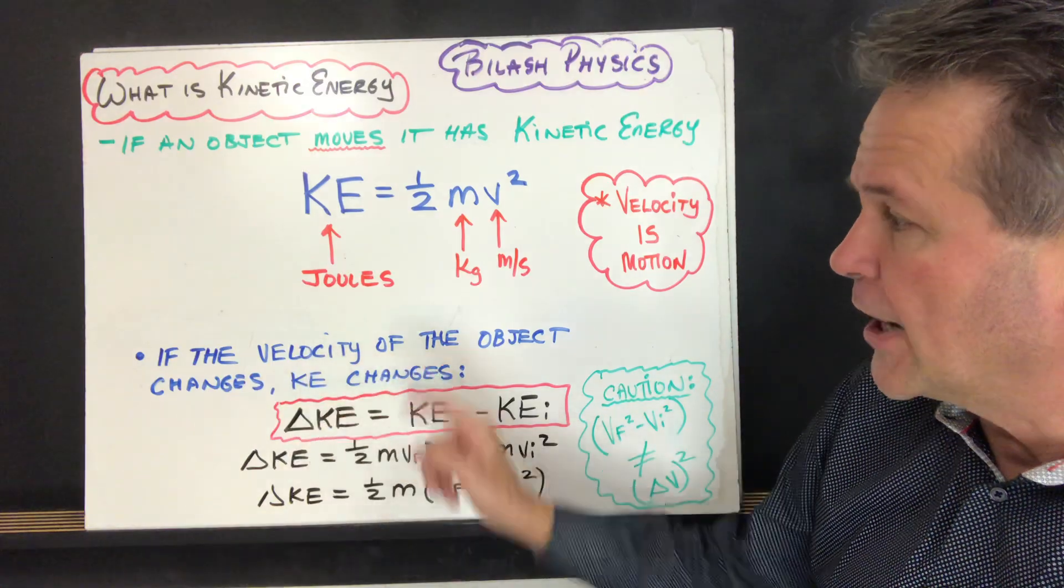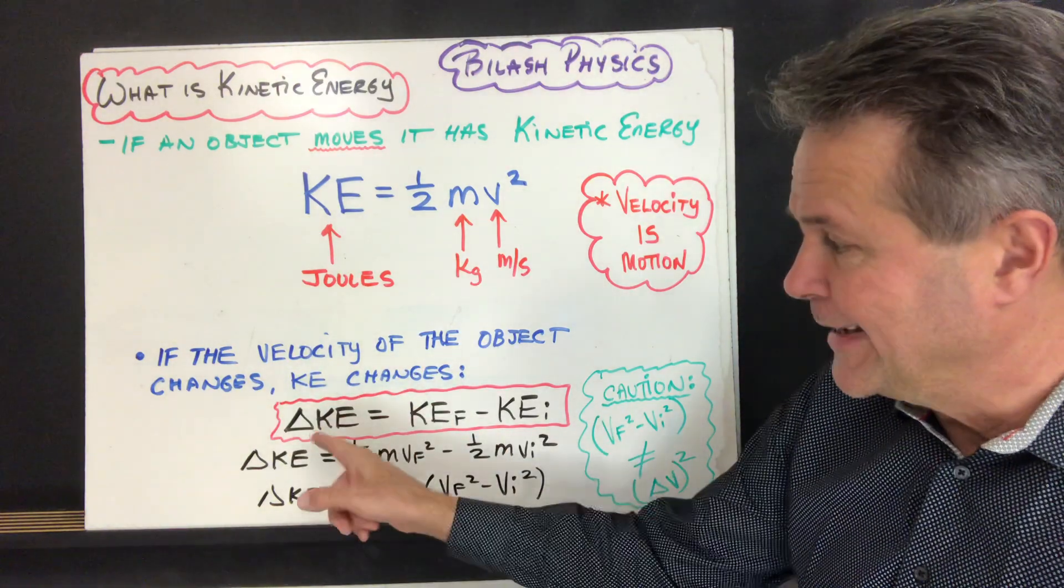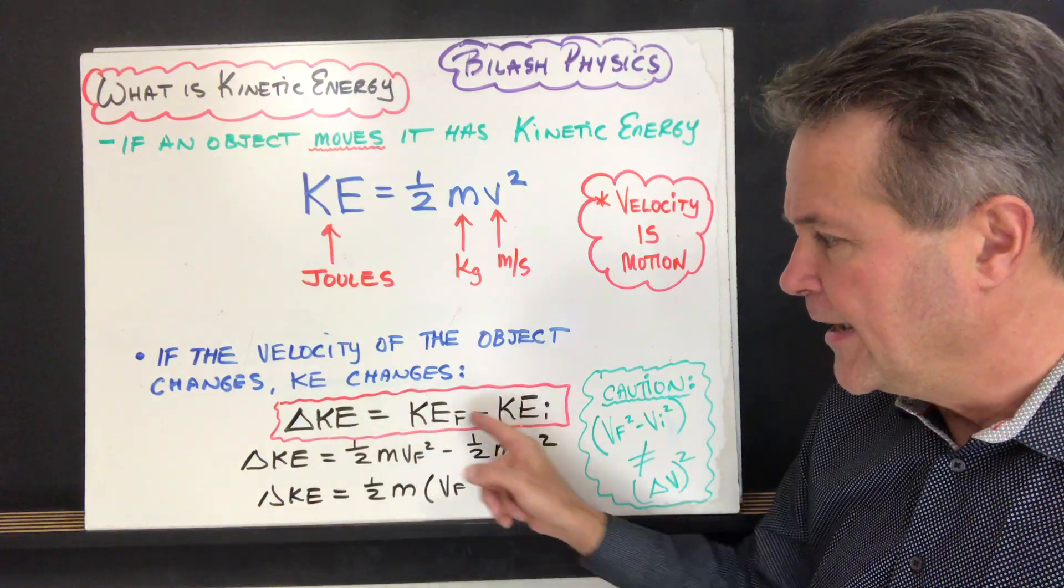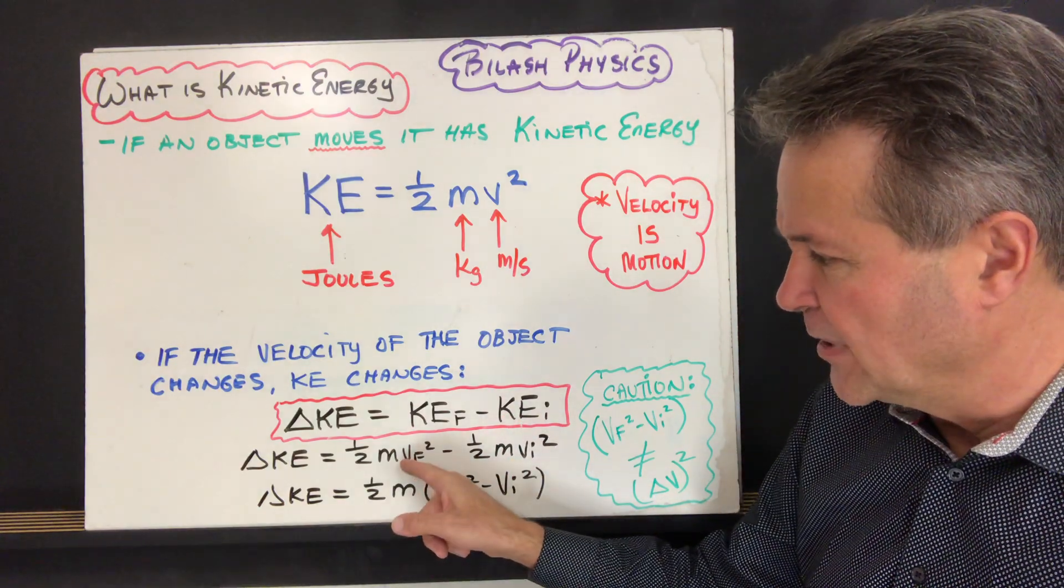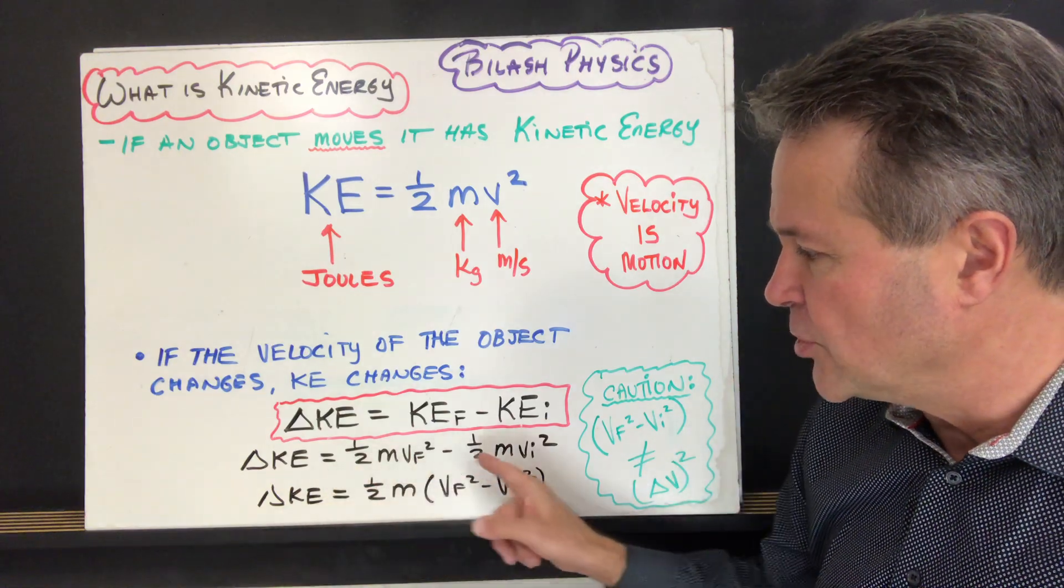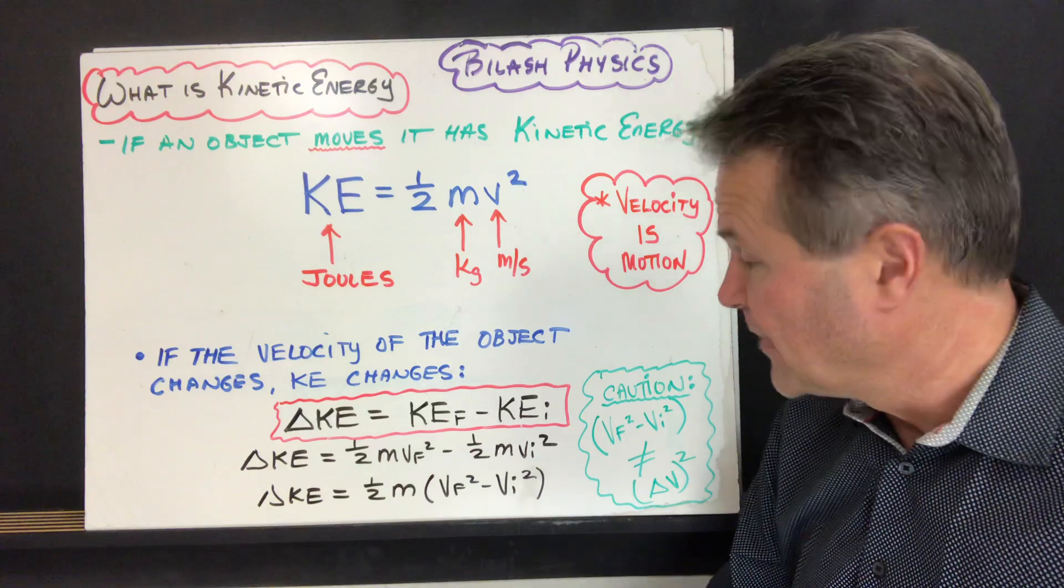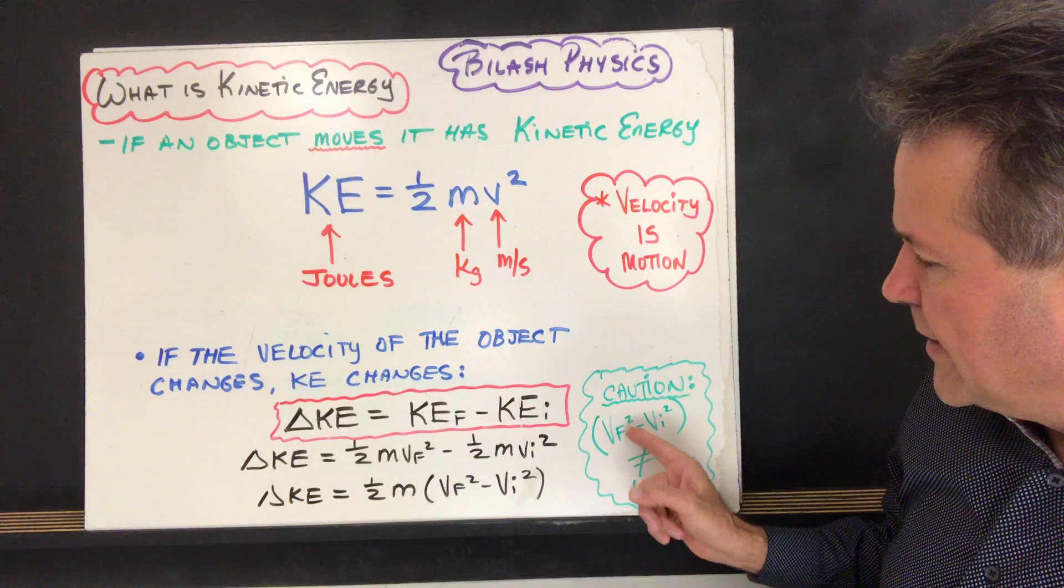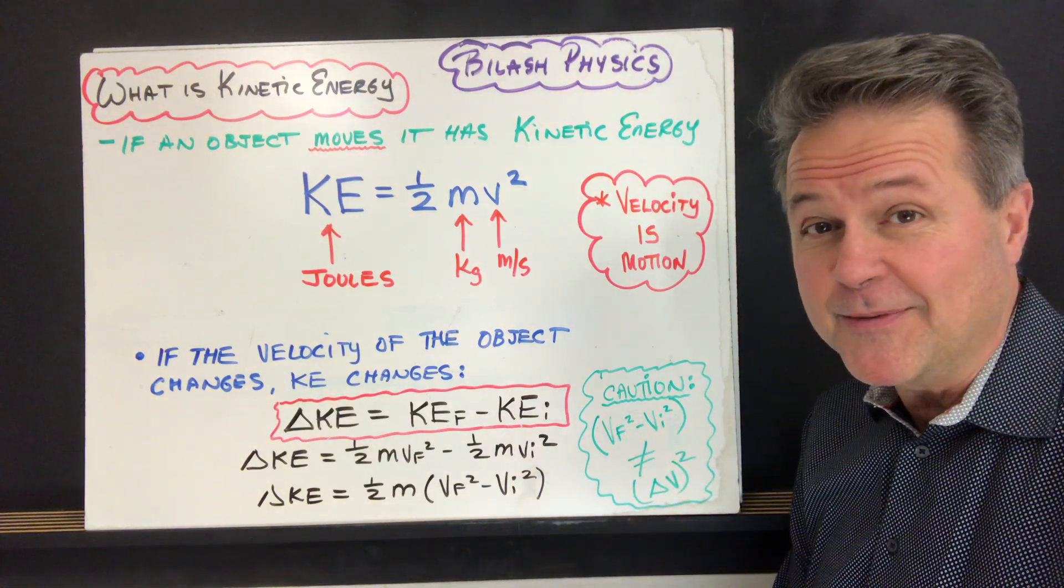Now if the velocity of the object changes, the kinetic energy changes. So kinetic energy is equal to the change, final minus initial, and what we can do is we can substitute that with the kinetic energy formula and we end up showing that the change in velocity is related to the change in kinetic energy. Now don't make the mistake that I have illustrated here. VF squared minus VI squared is not the same thing as delta V squared.